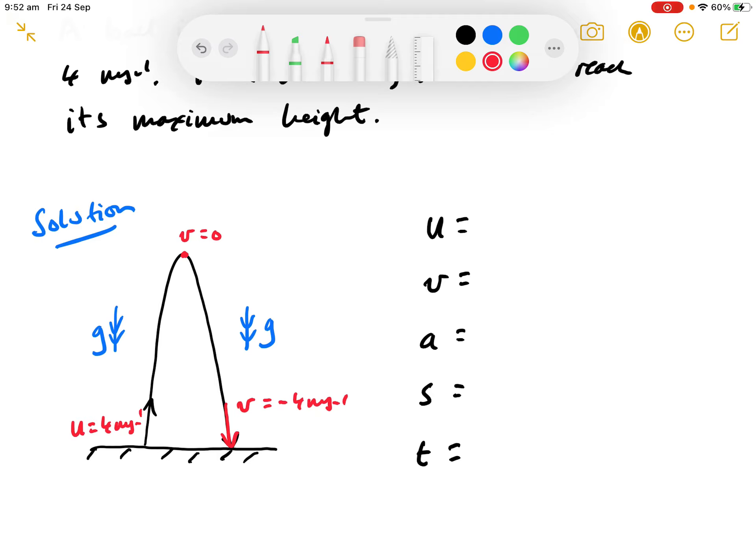And we know that at the maximum height, the velocity is zero. So, there's a hidden bit of information. Now, before I proceed, I'm going to put a little heading here. First half of motion. It's very useful to do that, because it lets the reader, the marker, know that all of your variables reflect that first half of the motion.